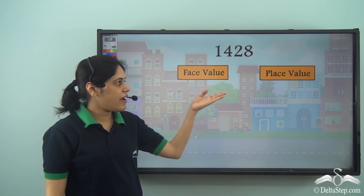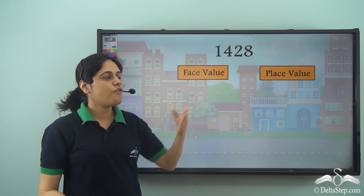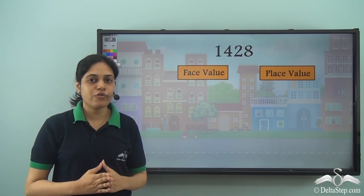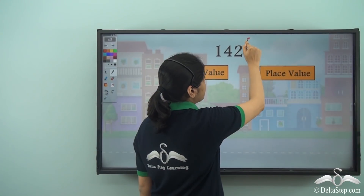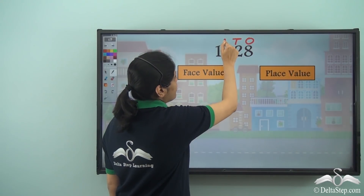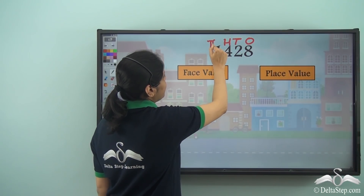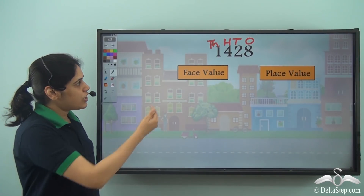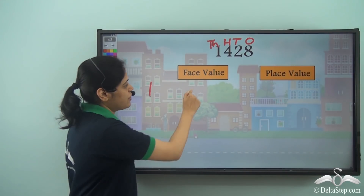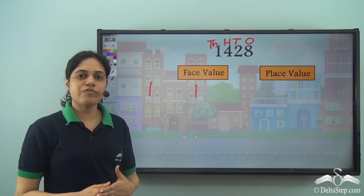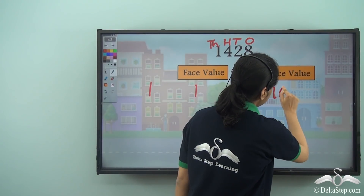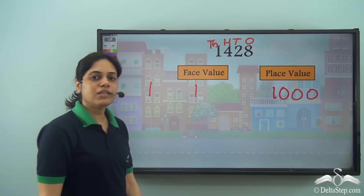So let us find the face value and place value of the digits of a 4-digit number. I have 1428 as the number. I have 8 as the ones digit, 2 as the tens digit, 4 as the hundreds digit, and 1 as the thousands digit. Let me take 1 first. What is the face value of 1? It is the digit itself, so 1. What is the place value of 1? 1 thousands means 1 thousand. So 1000 is the place value of 1.